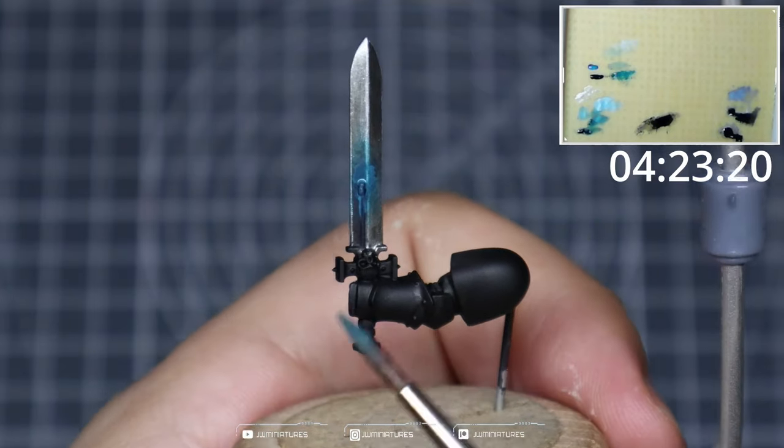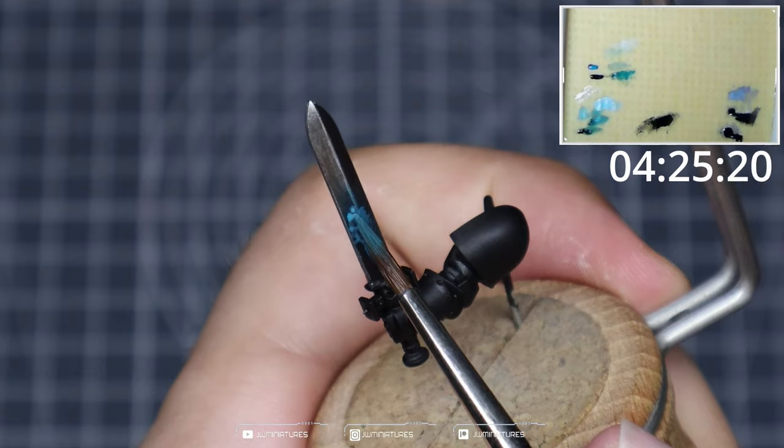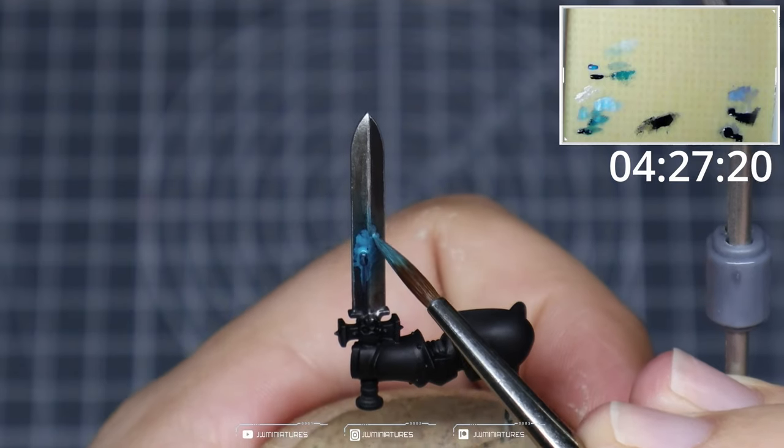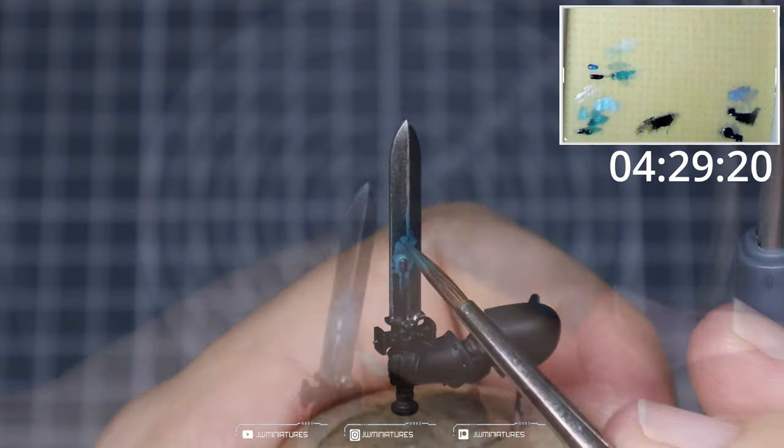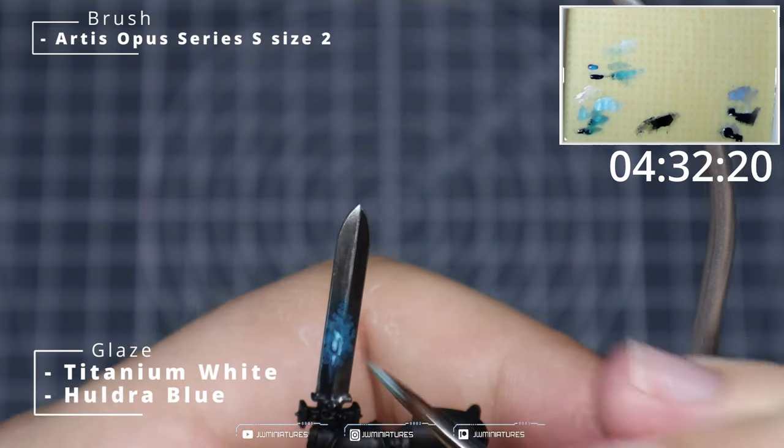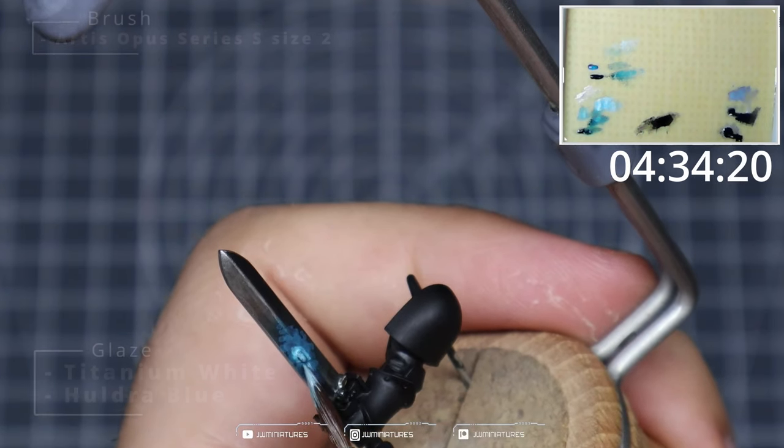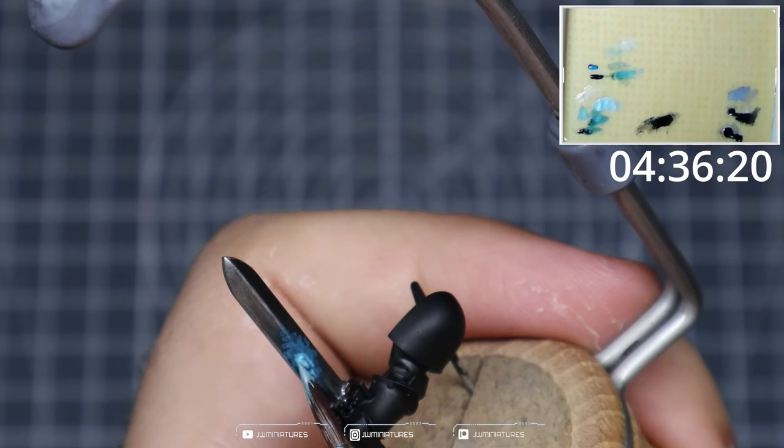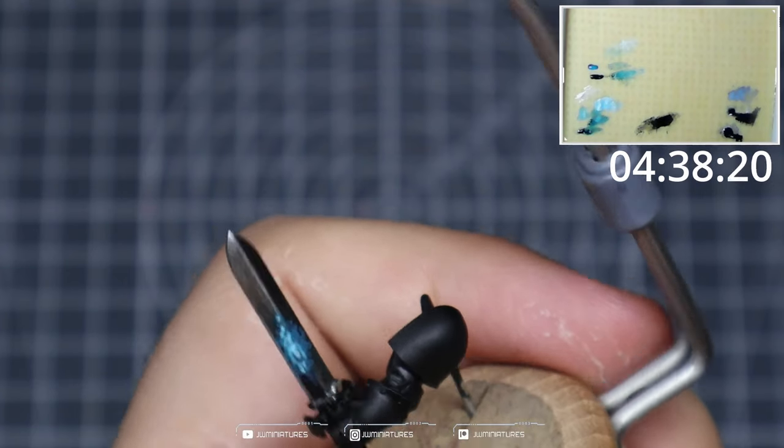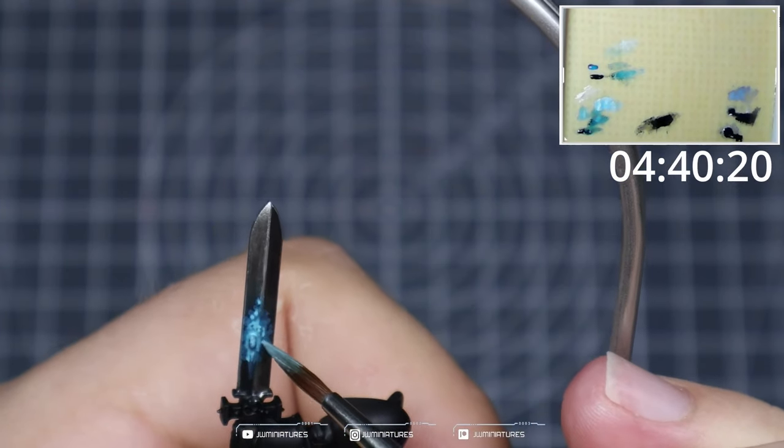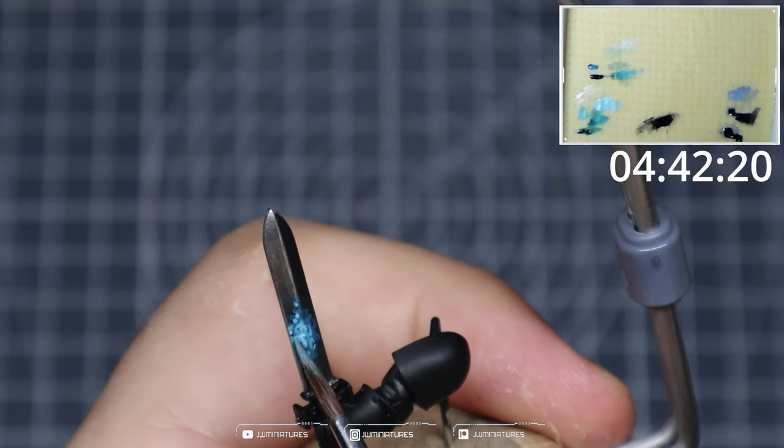Doing the same, mixing in some Titanium White this time. The reason that we're not using Ahriman Blue this time is I find it easier just to control with two colors than multiple colors. And we continue to build this up using those thin passes, creating this mottled dynamic movement effect within our blade.